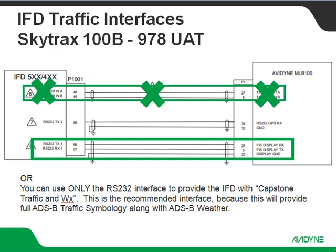The third option — and this is the recommended option — is to ignore the ARINC 429 part altogether and use only the RS-232 interface to provide both Capstone traffic and weather. That's going to give us full ADSB traffic symbology and ADSB weather, all on that one pair of RS-232s.